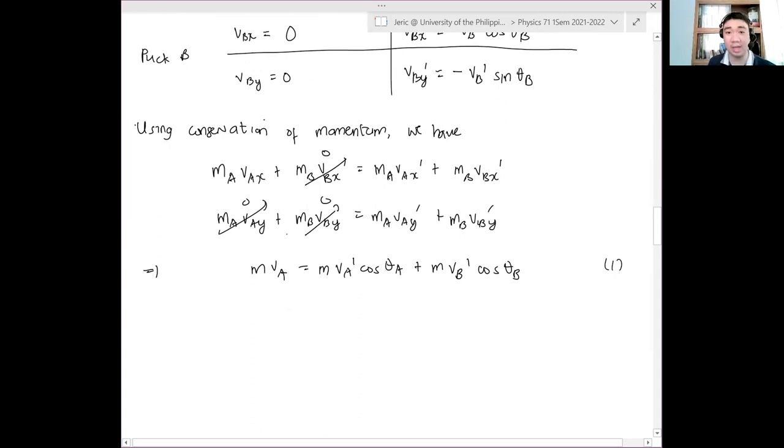Instead of writing V_{Ax}, I'll just write V_A. We know that these three terms are zero. From that, I can simplify as M V_A equals M V_A prime cosine θ_A plus M V_B prime cosine θ_B. This is equation 1. From the y-direction, zero equals M V_A prime sine θ_A minus M V_B prime sine θ_B. This is equation 2. The masses can cancel out. V_A prime and V_B prime are unknown. The angles are known. We have two unknowns and two equations, therefore we can solve this uniquely. Note that we don't know if this is elastic or inelastic. We just know we have conservation of momentum. We will see later that this is not an elastic collision. This is actually a partially inelastic collision.